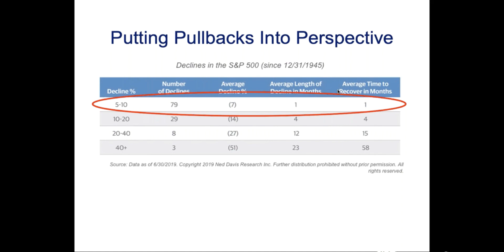There have been 80 pullbacks since 1945 — they last about a month, and within a month you recover to new highs. But when you close below 10% down, you're in a correction. Corrections usually result in a double bottom. There have been 30 corrections since 1945, averaging 14% and taking four months to recover to new highs. So that 3,200 area is critical — looking at it from a historic point of view rather than just charting.